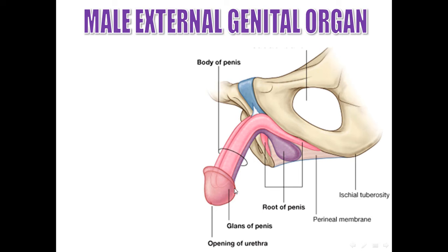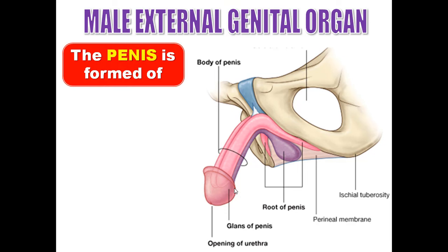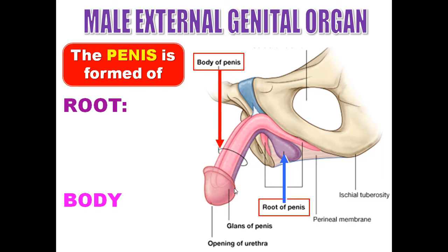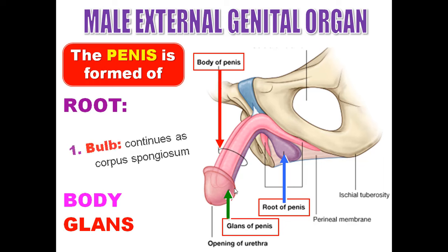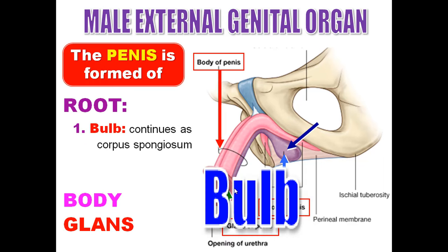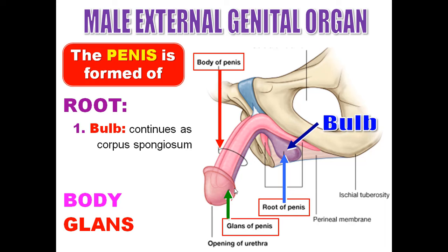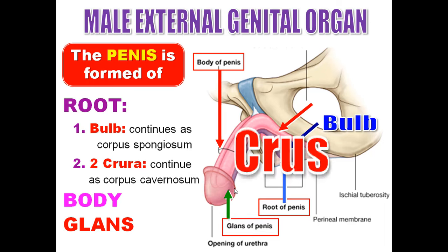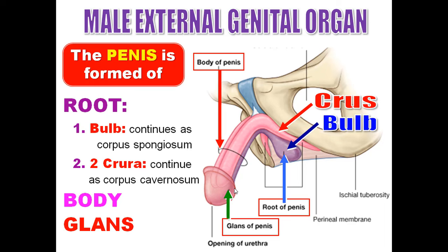The male external genital organ is the penis, formed of three parts: the root, the body, and the glans. The root consists of the bulb in the middle, which is continuous with the corpus spongiosum containing the urethra, and two crura on the sides, each continuous with a corpus cavernosum — erectile tissue.